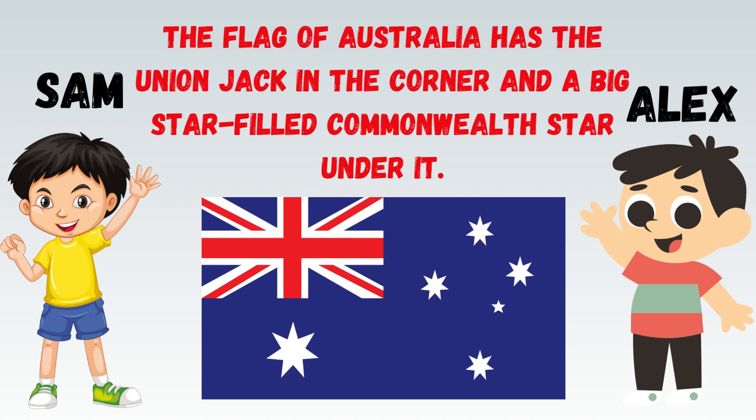The flag of Australia has the Union Jack in the corner and a big star-filled Commonwealth star under it.